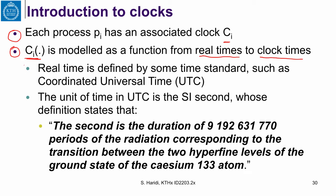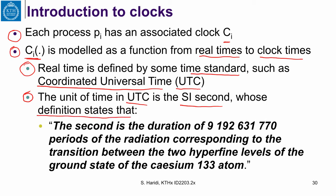What is real time? Real time is defined by some time standard, for example the Coordinated Universal Time, called UTC. It is actually the French name — temps universel coordonné — which is why the abbreviation is UTC rather than CUT. A unit of time in UTC is the SI standard second, where SI stands for the International System of Units.